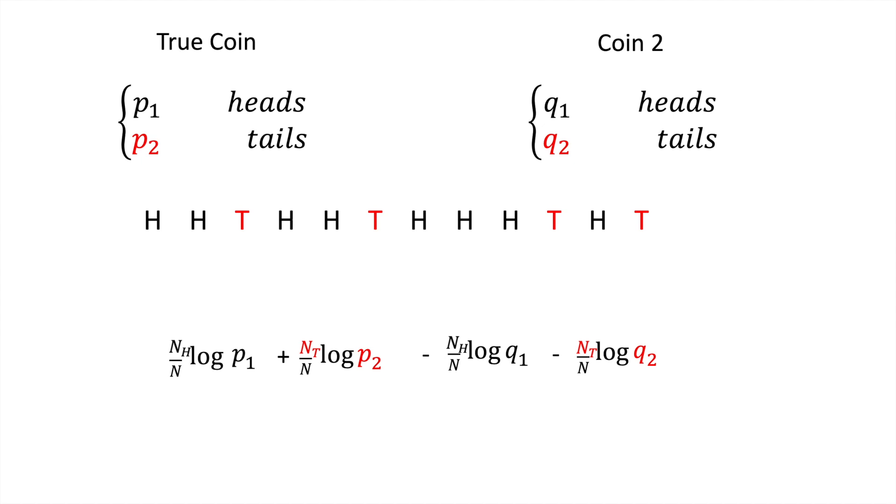This allows us to say that in the limit, nh over n is p1 and nt over n is p2. After some final logarithmic manipulation, we then arrive at our final expression.